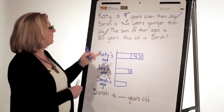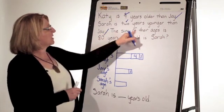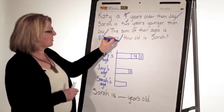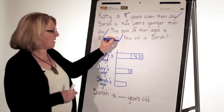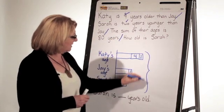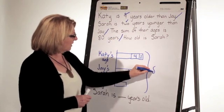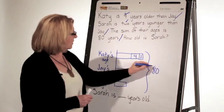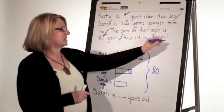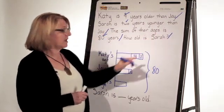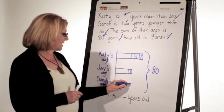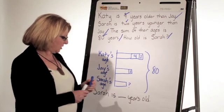Check it off. The sum of their ages is 80 years. Stop. So all of these added together equal 80. Check it off. How old is Sarah? The specific information I'm looking for is Sarah's age.